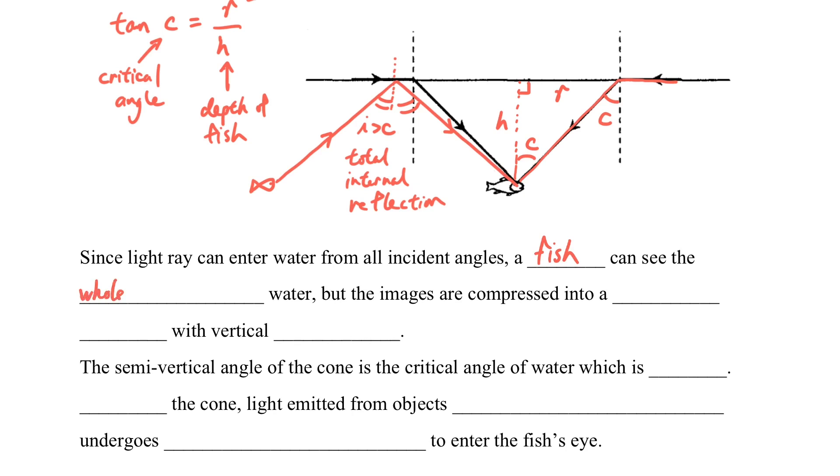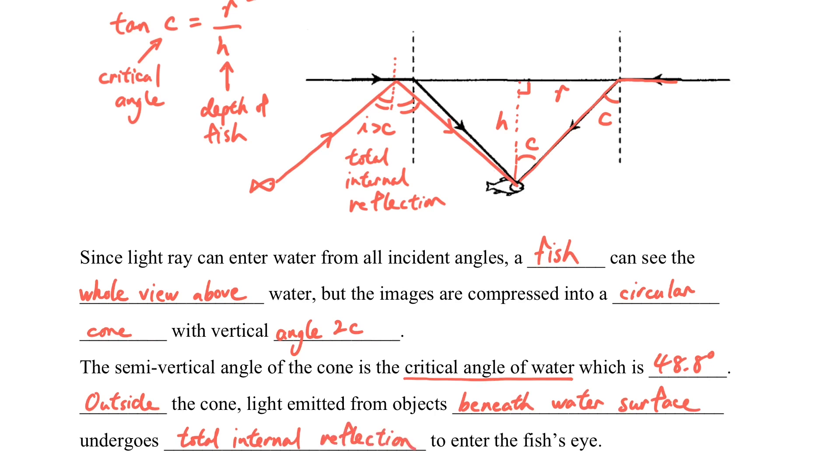Since light will enter the water from all incident angles, the fish can see the whole view above the water. The image is compressed into a circular cone with the angle of 2c. The critical angle of water is 48.8 degrees, so you can calculate what 2c is in this case. And outside the cone is the light emitted from objects beneath the water surface, which is the seabed. Due to the total internal reflection, it enters the fish's eye. This is the fish eye view.